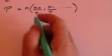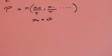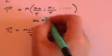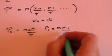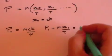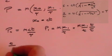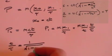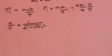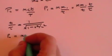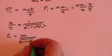Remember, x0 is c times t. So the first element of this vector, P0, is m times ct divided by tau. We've already shown that t divided by tau equals 1 over the square root of 1 minus v squared over c squared. So we can conclude that P0 equals mc divided by the square root of 1 minus v squared over c squared.